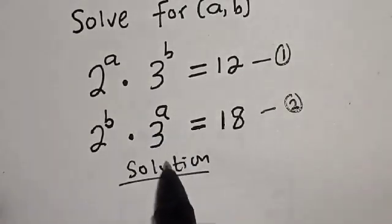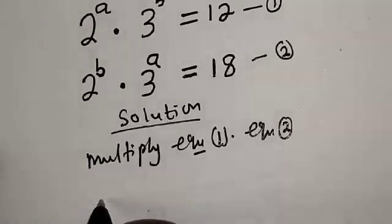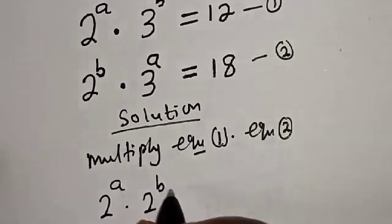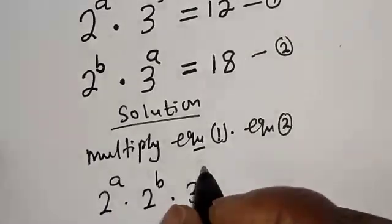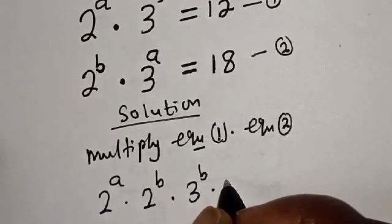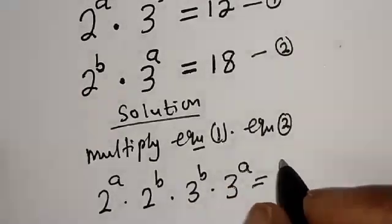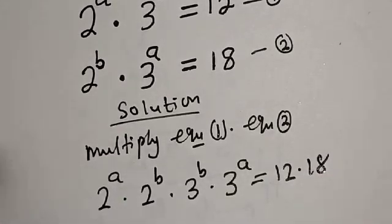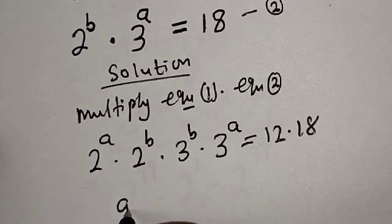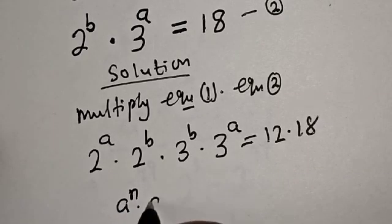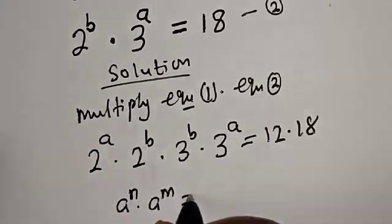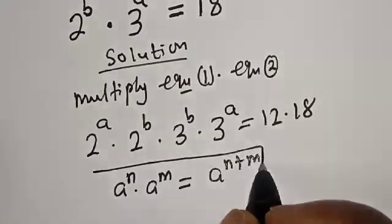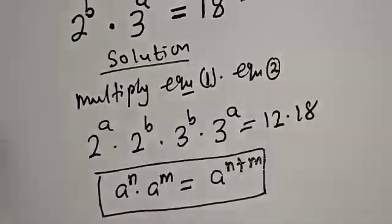Now let's multiply equation 1 by equation 2. That is, 2 raised to power A multiplied by 2 to the power B, multiplied by 3 to the power B multiplied by 3 to the power A, is equal to 12 multiplied by 18. Now take note of this rule: if you have A raised to power N multiplied by A raised to power M, this is equal to A raised to power N plus M.